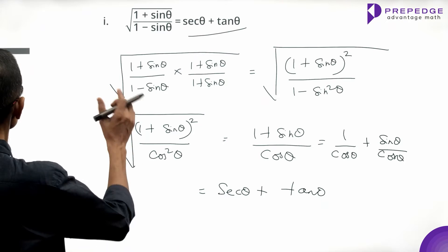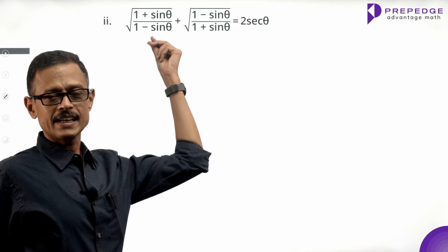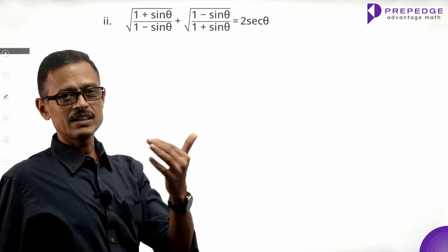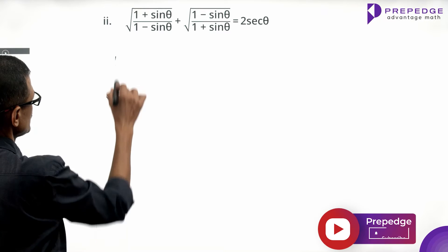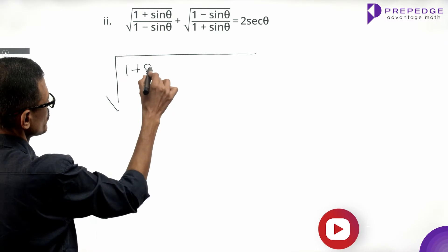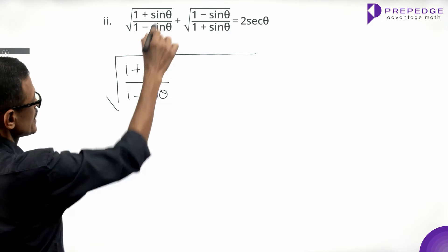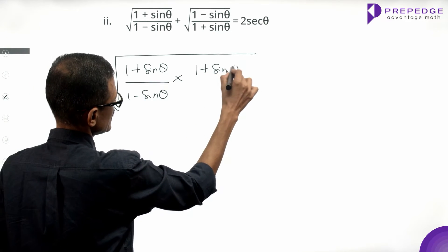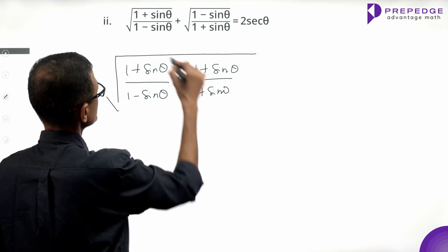Moving on to the second part. For the first term, we multiply and divide by 1 plus sin theta, and for the second term, we multiply and divide by 1 minus sin theta. So the left-hand side will have square root of (1 plus sin theta) over (1 minus sin theta) multiplied by (1 plus sin theta) over (1 plus sin theta), plus square root of (1 minus sin theta) over (1 plus sin theta) multiplied by (1 minus sin theta) over (1 minus sin theta).